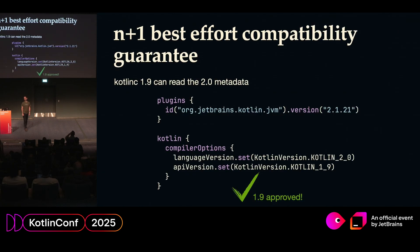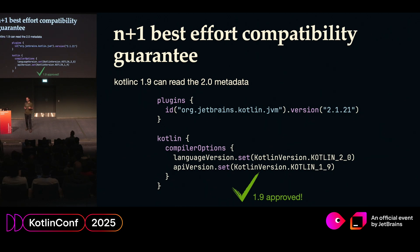One cool thing about Kotlin metadata is that the Kotlin compiler can read it from the future. If you are using the Kotlin compiler 1.9, you can actually read the metadata from 2.0 — obviously not use all the features, but you can still be compatible with something compiled with 2.0. So you can set your language version to 2.0 and your API version to 1.9, and it will still work.